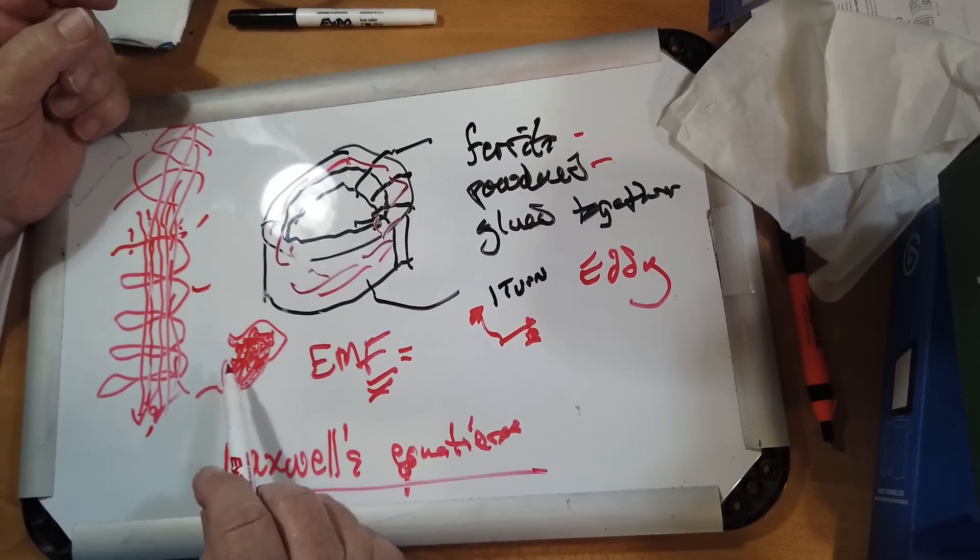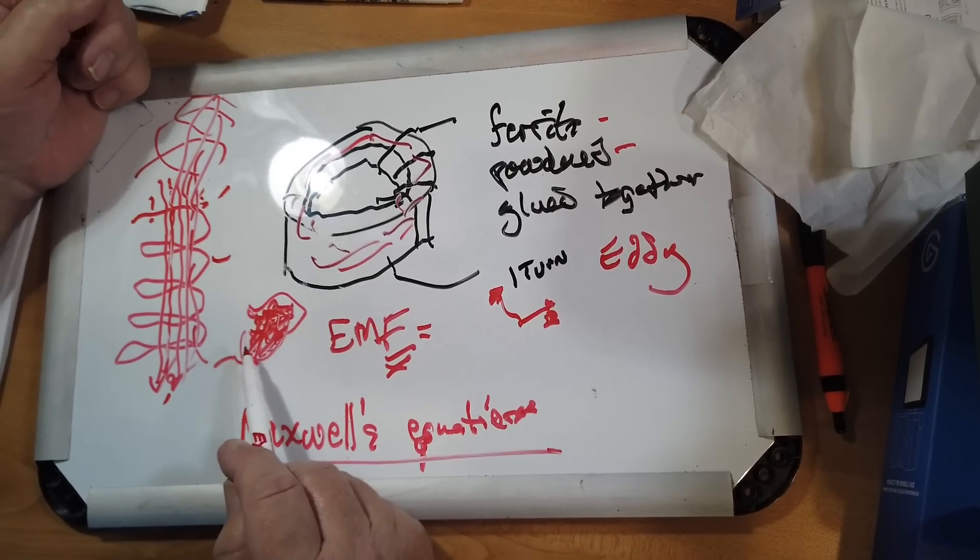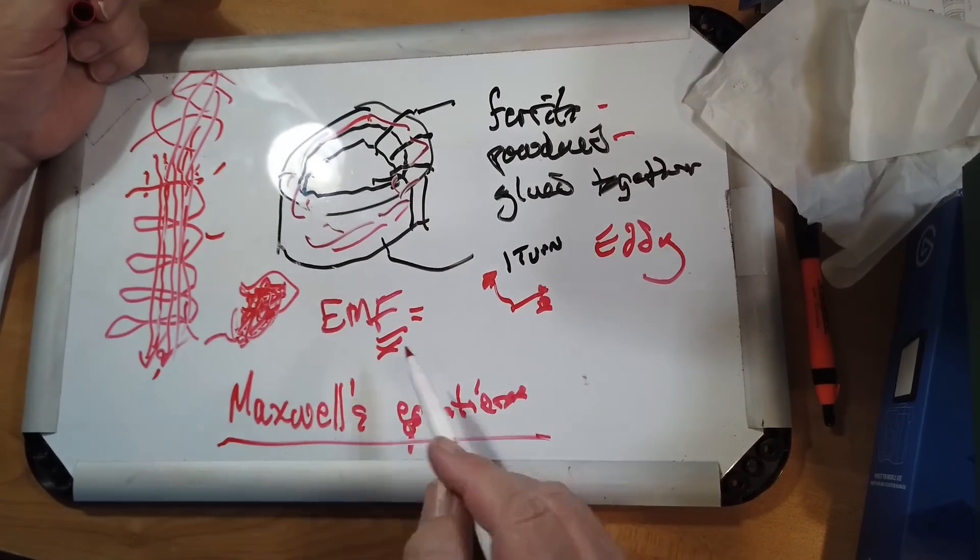These eddy currents can lead to lots of losses, transformer heating, things like that. If your toroid's getting hot, something's going wrong.